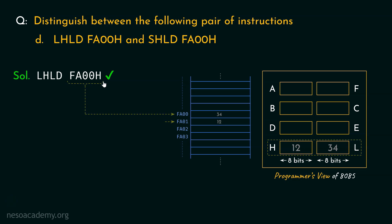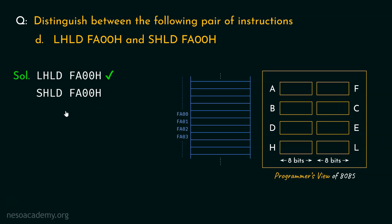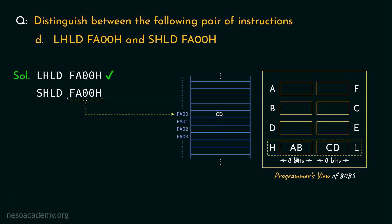Now let's focus on the second instruction: SHLD FA00H. The mnemonic stands for 'store HL register pair using the direct address provided in the instruction.' To illustrate, suppose the HL register pair contains the value ABCD. This value must be loaded before executing this instruction. Execution will store CD into memory location FA00, and then AB into the consecutive memory location FA01.